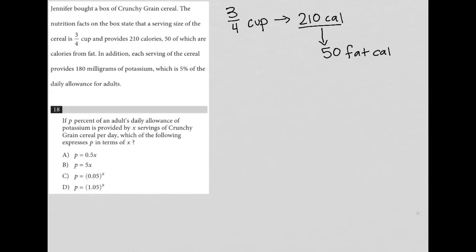In addition, each serving of the cereal provides 180 milligrams of potassium. So not only do we have 210 calories, but we also have 180 milligrams of potassium, which is 5% of the daily allowance for adults.